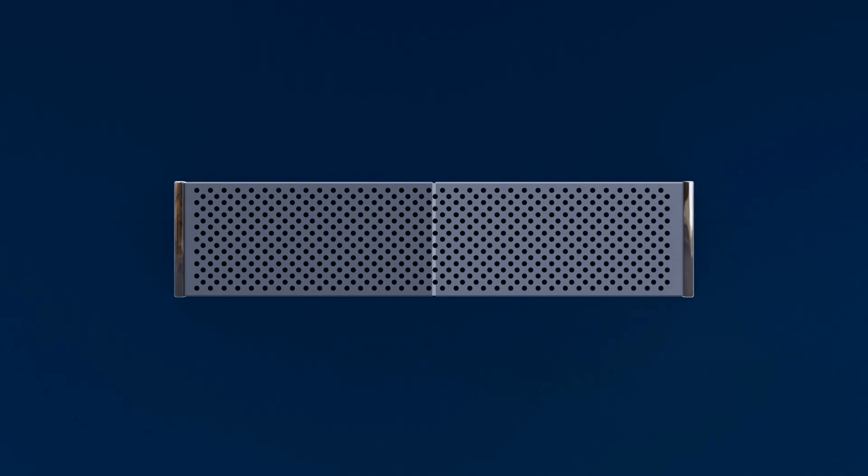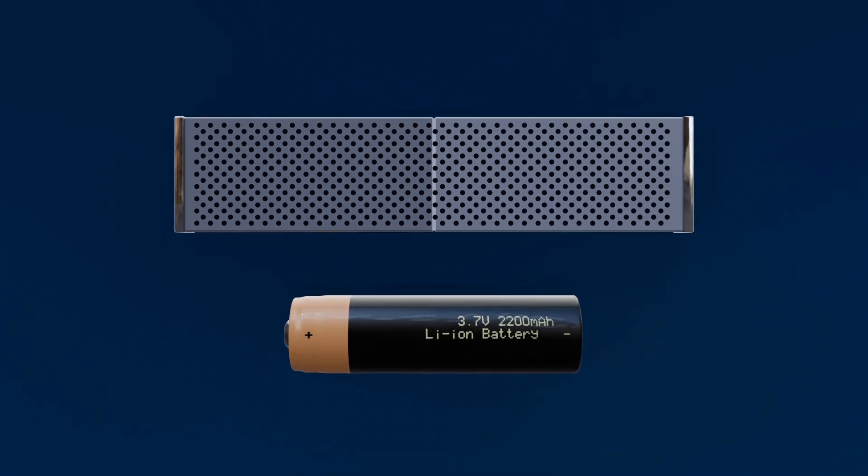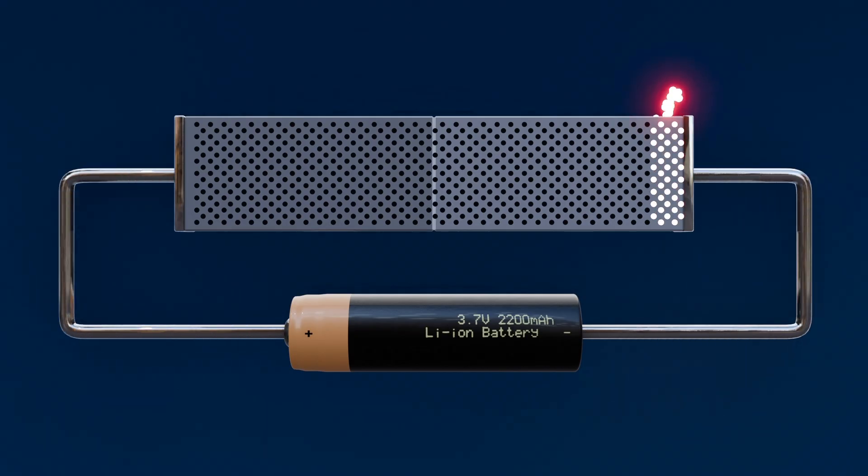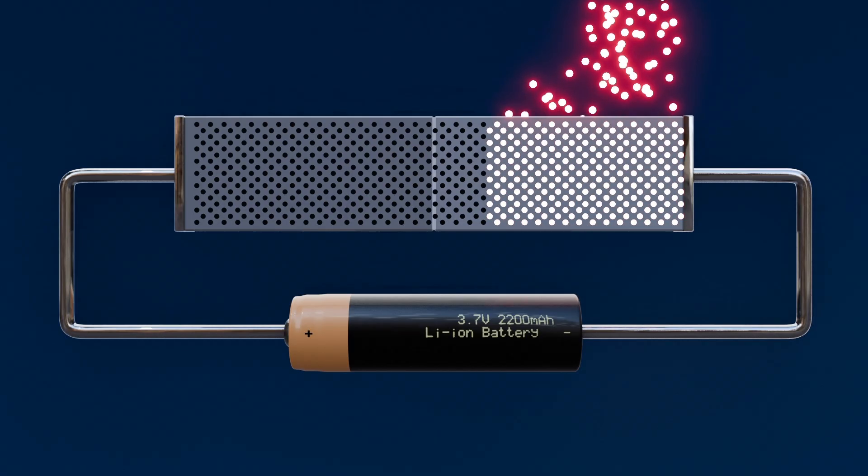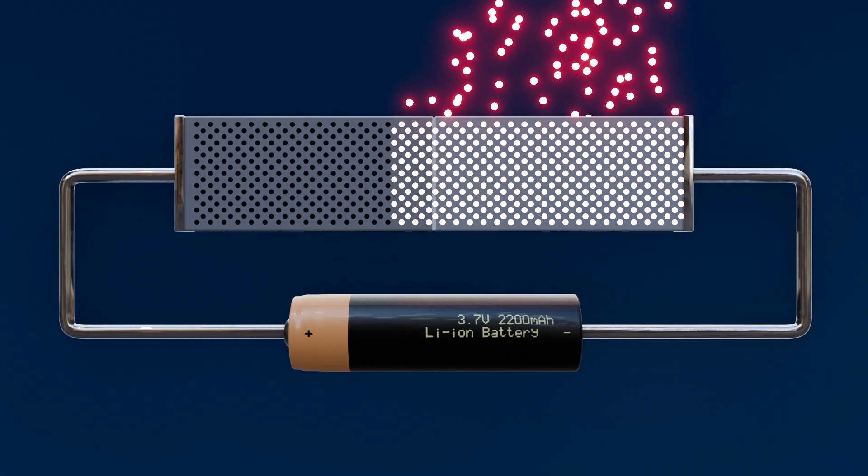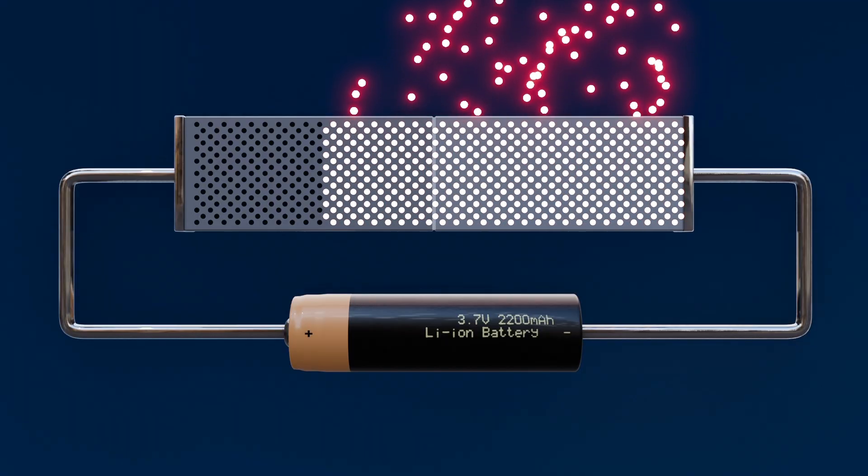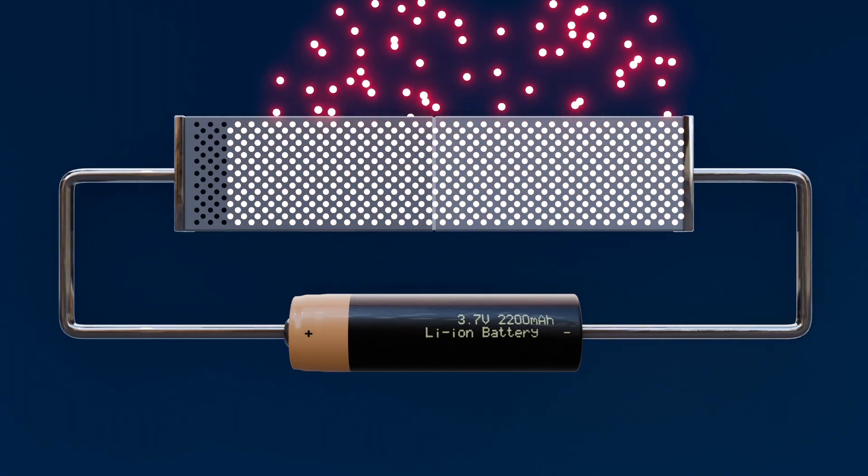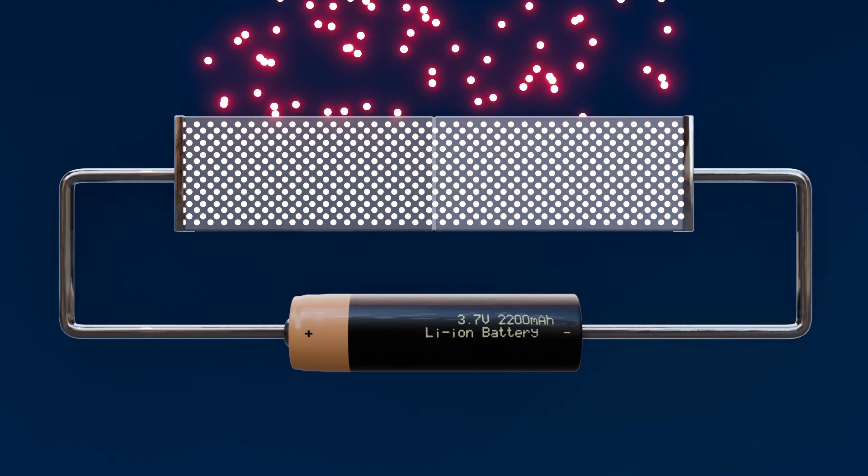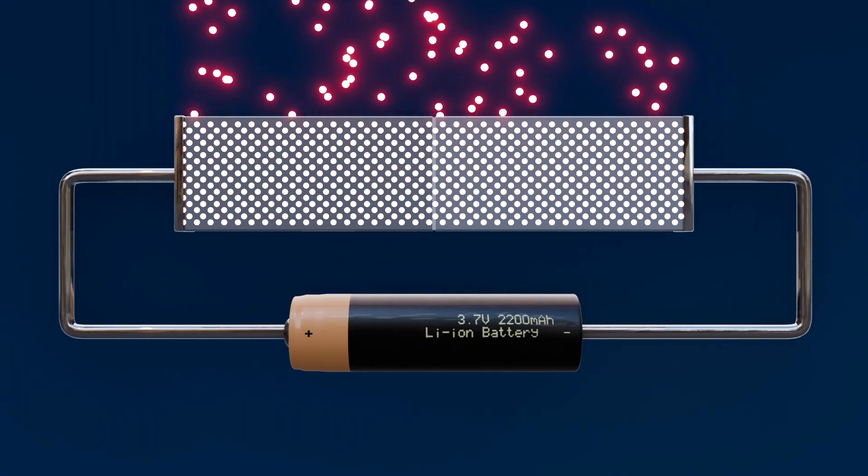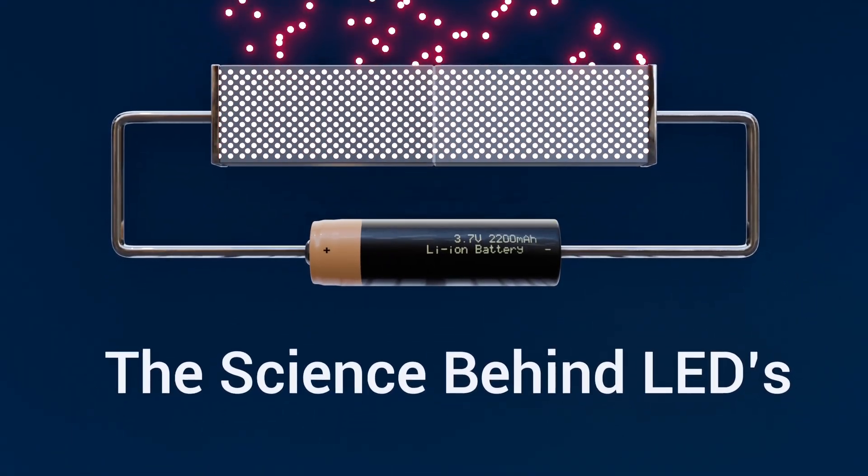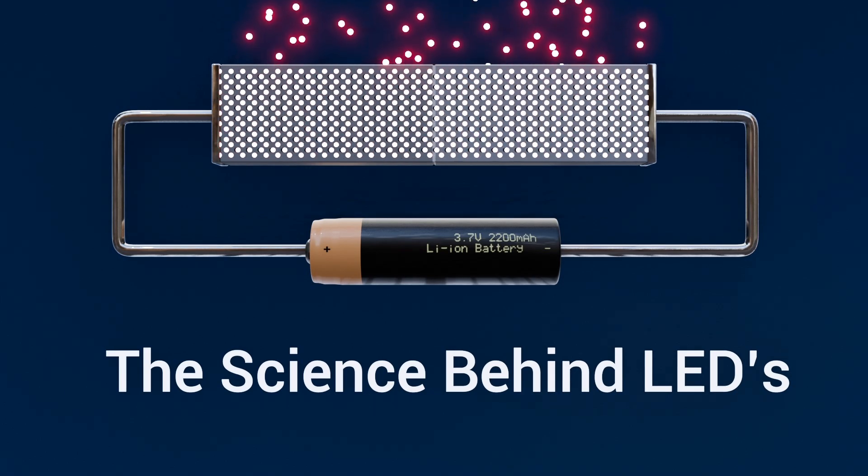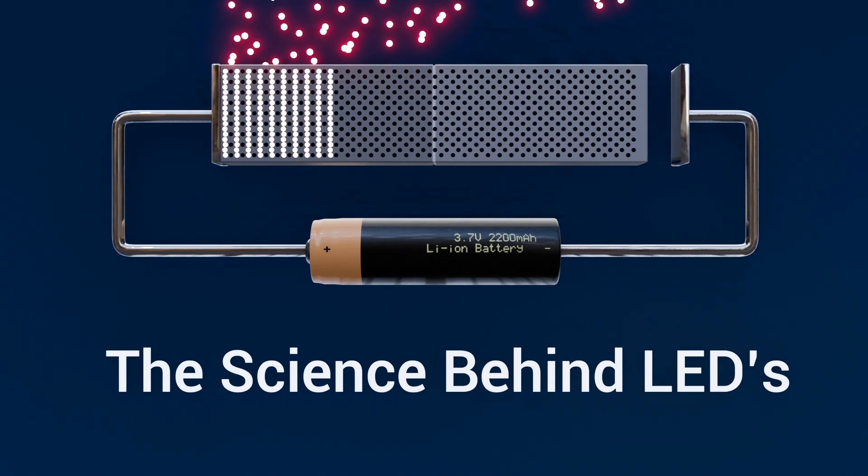This explains why LEDs can only emit light once their voltage threshold is exceeded. If we connect a battery and show the electron flow through a P-N junction, we can see the forward bias in action. Once you forward bias that P-N junction, electrons race across and reunite with holes in the active region, releasing their extra energy as photons of light. That, my friends, is electroluminescence in action.